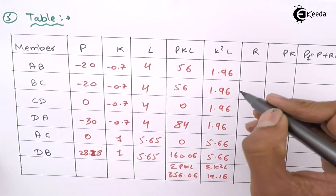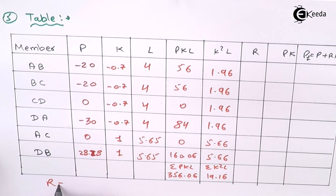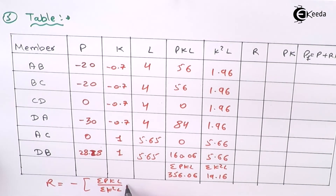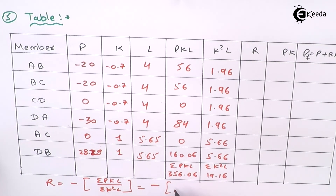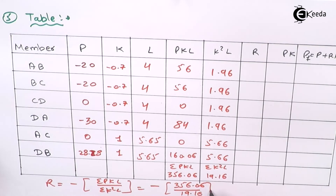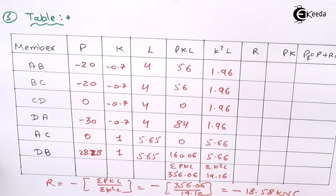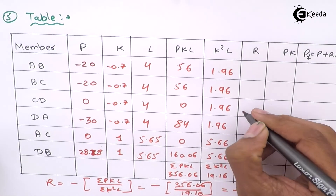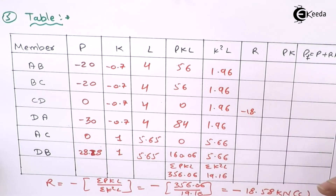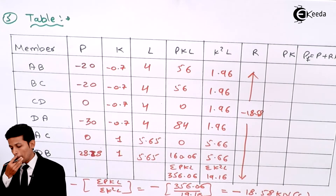The redundant R is calculated using the formula: R equals minus summation PKL over AE, divided by summation K-squared L over AE. Since AE is constant it cancels out, giving R equals minus 356.06 divided by 19.16, which equals minus 18.58 kN. The negative sign indicates compression.